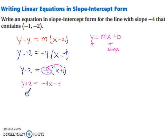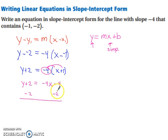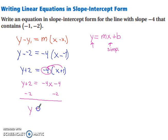Now we can subtract 2 from both sides. Remember, you can only add and subtract like terms. So you can't subtract 2 from negative 4x, but you can from negative 4. So we have y equals negative 4x minus 6.